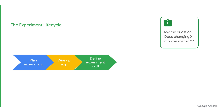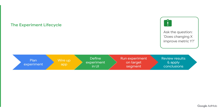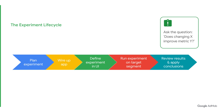Number three, define the experiment in your AdMob and Firebase UI. Number four, run the experiment on your target or intended population. Number five, review the results. Returning to our example from Pomelo Games, after running their experiment, they found that their change increased revenue by 35% without losing any players. Happy with their results, they rolled out the variant with the changes to all their players. If their experiment had failed, they could have easily rolled back the changes.